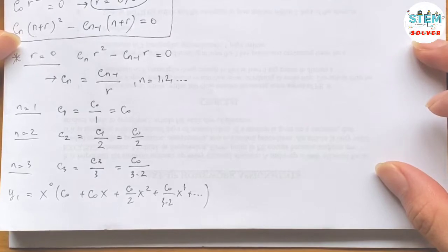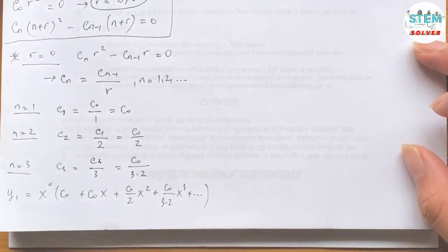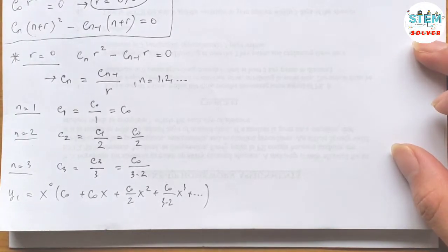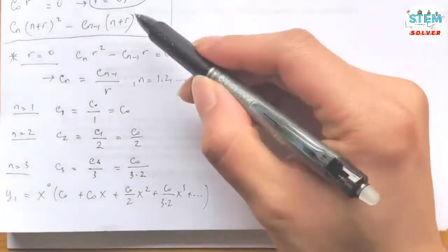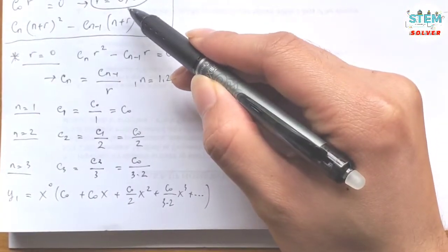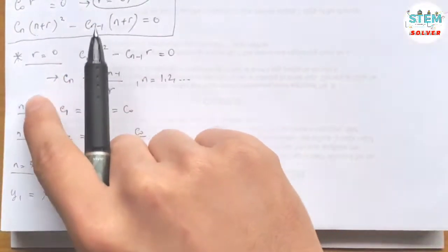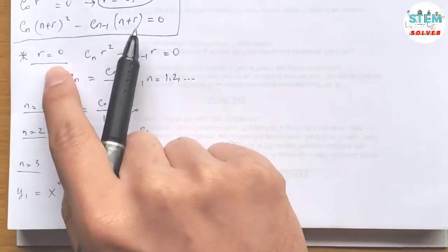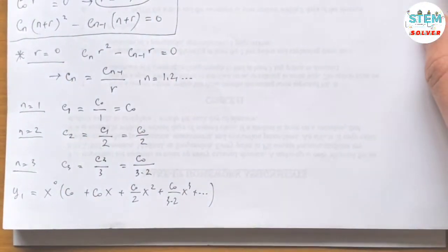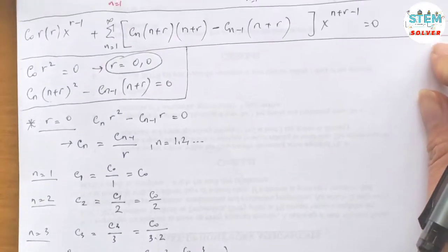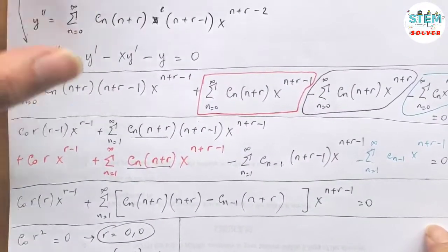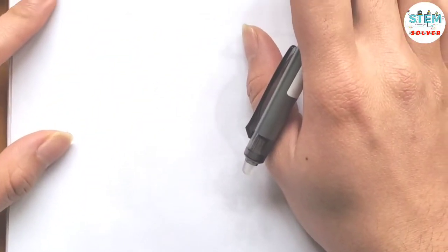Now for y_2: since our r value is just 0, a single value, we cannot apply Frobenius a second time with a different r. So we have to use the reduction of order formula from the previous chapter. For the second solution, we use y_2 equals y_1 times the integral of e to the negative integral of q(x) dx, divided by y_1 squared, dx.